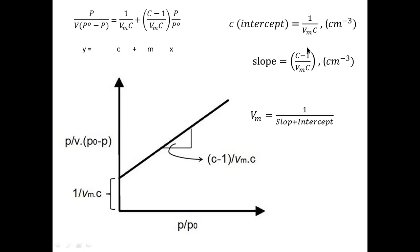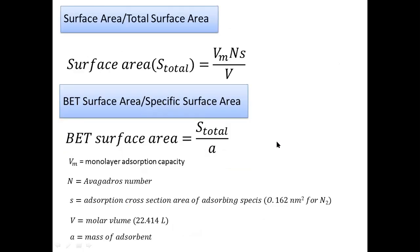The easiest way to calculate vm is to take the sum of the slope and intercept and divide by one — that gives you the value of vm. If you want to learn more, watch the previous video where we discussed in detail how vm equals one over (slope plus intercept). So vm is obtained from the slope and intercept of the BET plot.